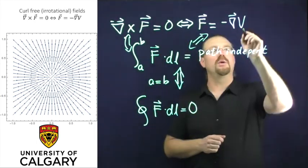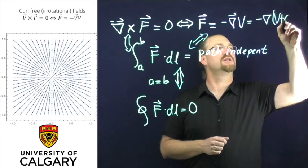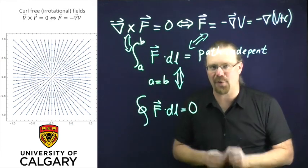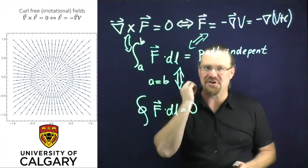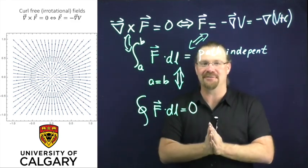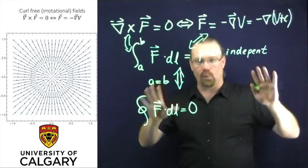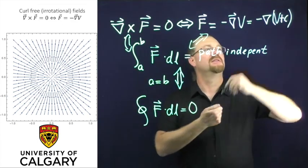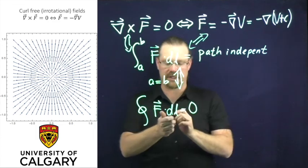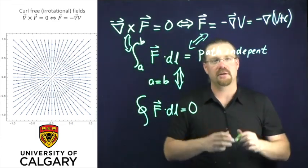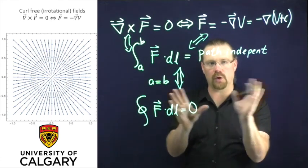We can always rewrite this with some additional constant. It will turn out in a later video that the fact that we can rewrite this with that extra constant will lead to charge conservation — it's astounding. We've got these different statements: the curl-free condition, the scalar potential, path independence, the vanishing closed line integral — all of those statements come from the fact that our field is irrotational. Our curl is zero. They're all equivalent.